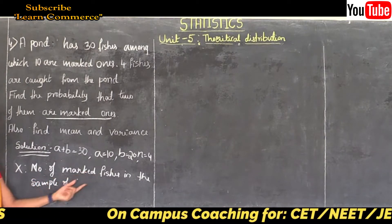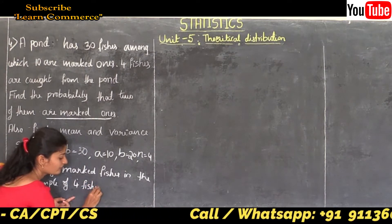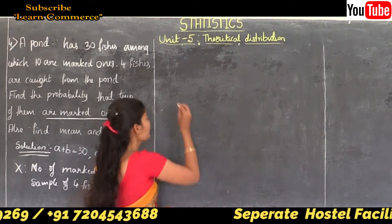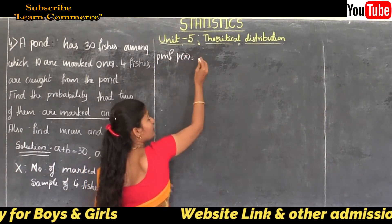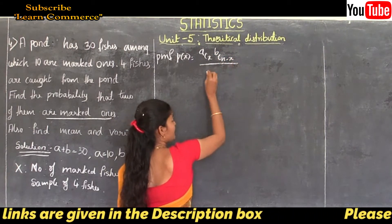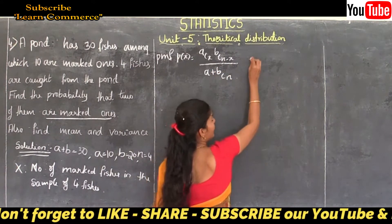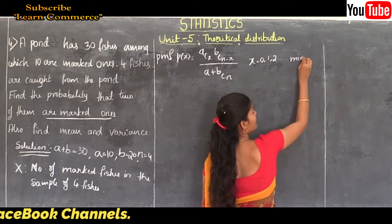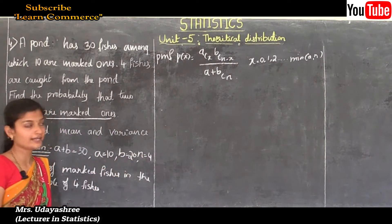The variable x is the number of marked fishes in the sample of 4 fishes. Now let's write the probability mass function, that is the PMF. P of x equals a C x times b C (n minus x), divided by (a plus b) C n, where x takes values 0, 1, 2, up to minimum of a and n.